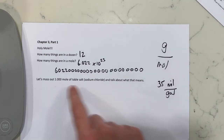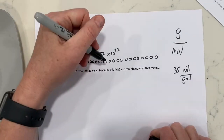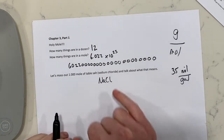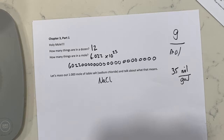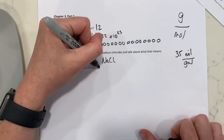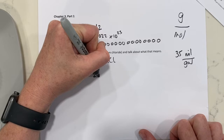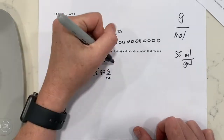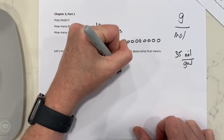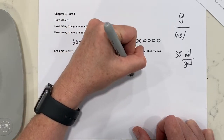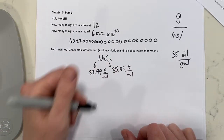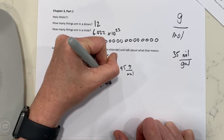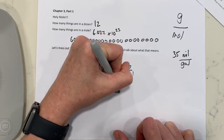Let's take a look at table salt. Sodium chloride is NaCl — sodium has a plus one charge, chloride has a negative one charge, so we only need one of each. Sodium has a mass of 22.99 grams per mole and chlorine is 35.45 grams per mole. The mass of sodium chloride — we just add those up — and we get 58.44 grams per mole.